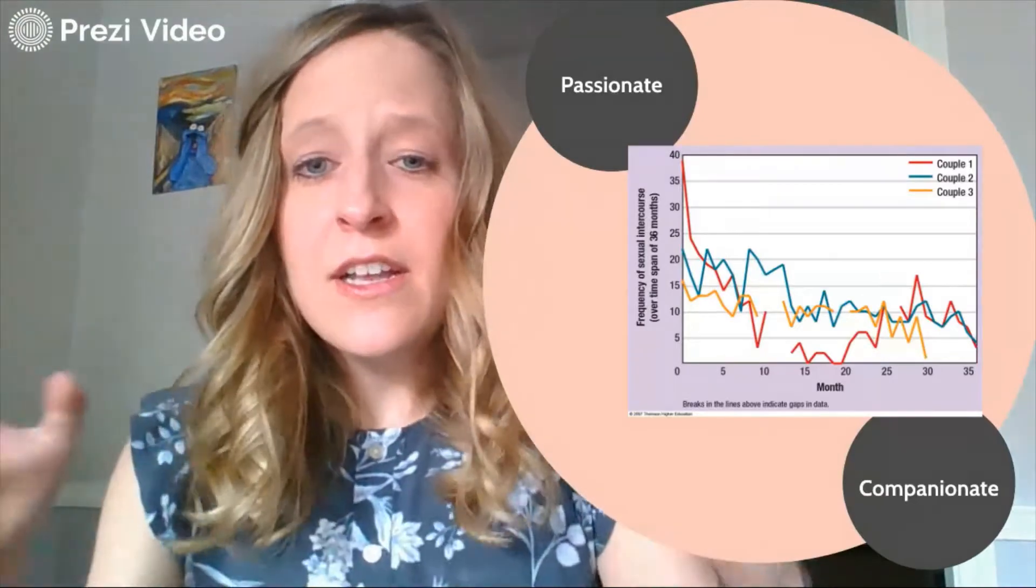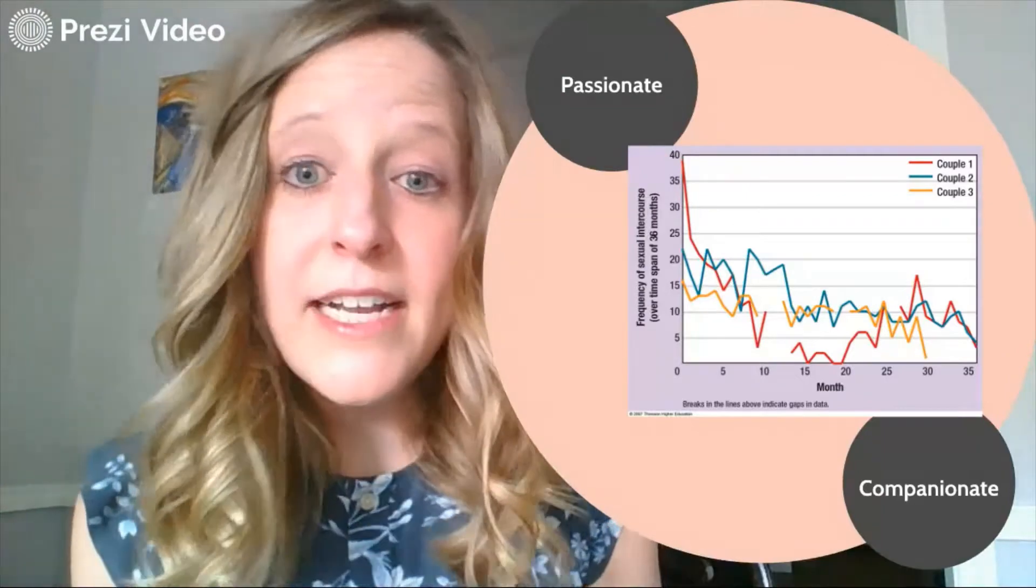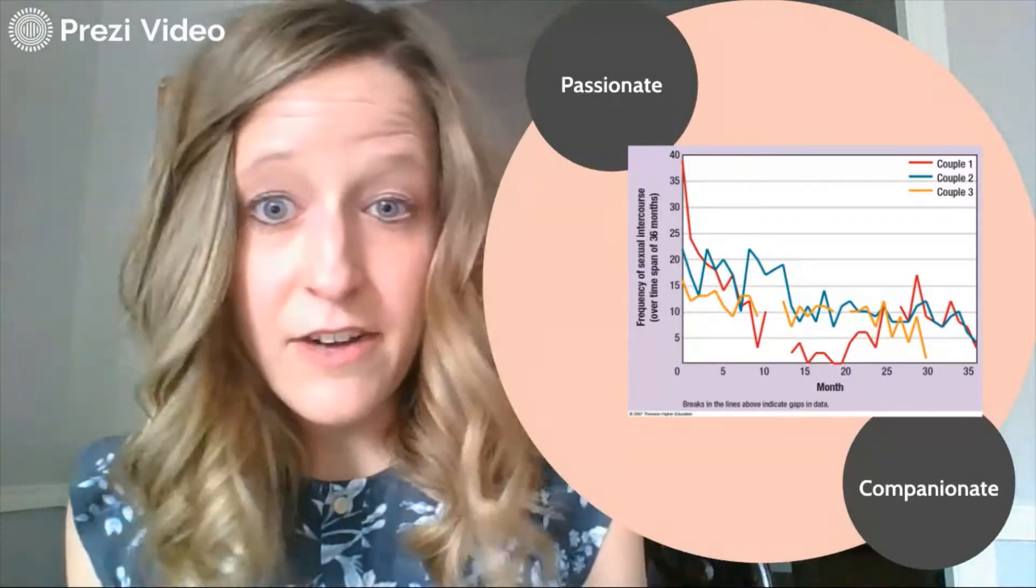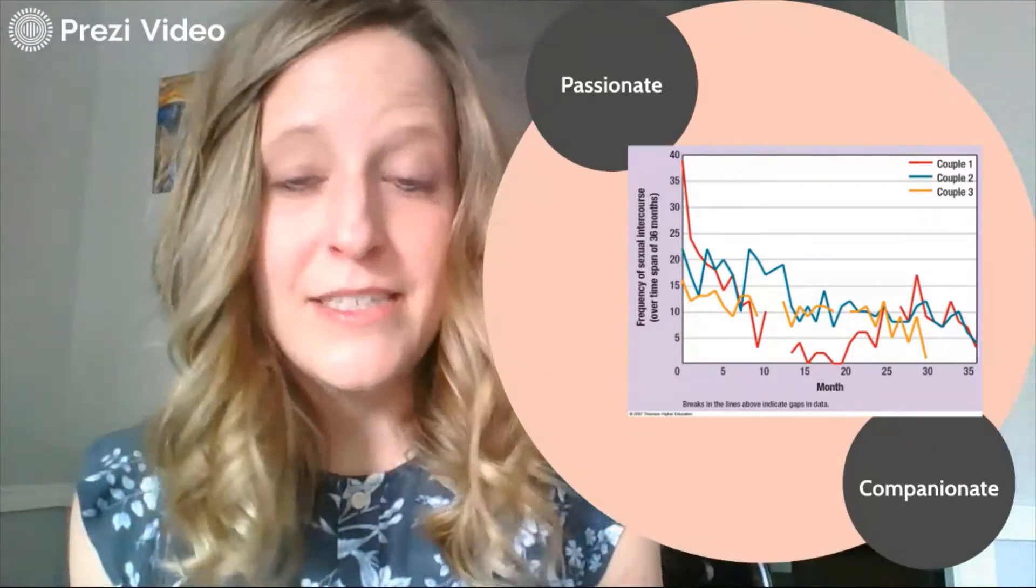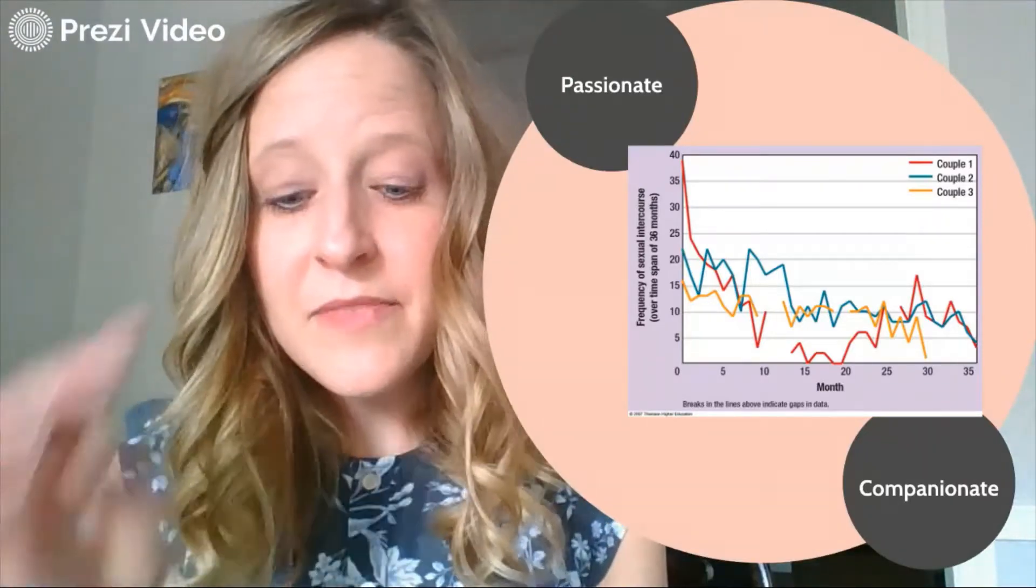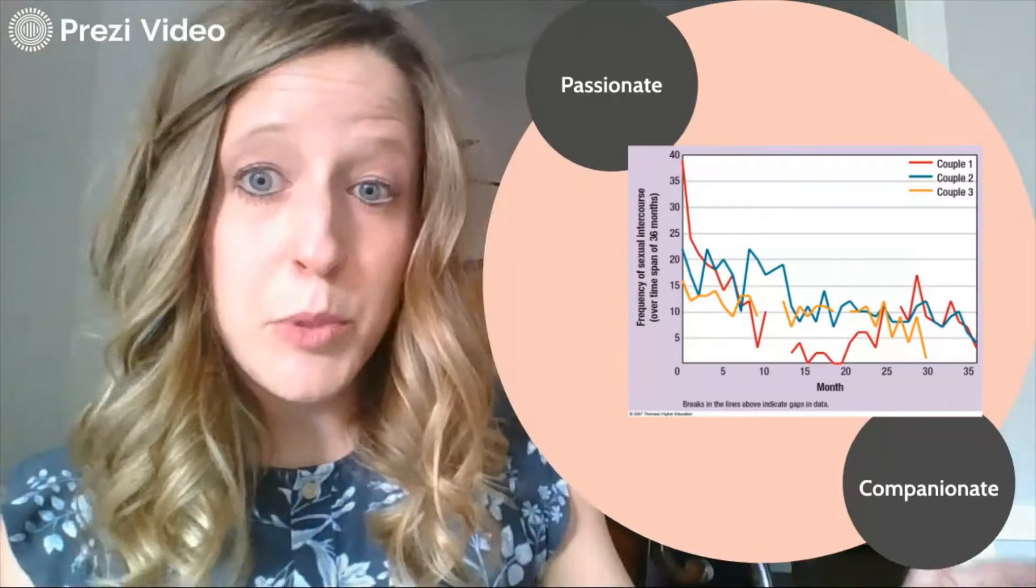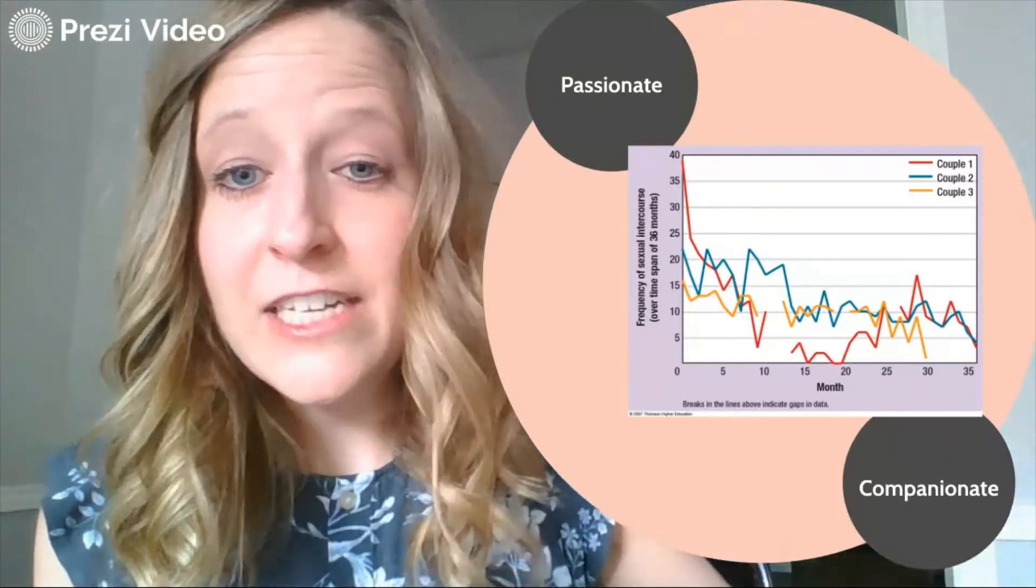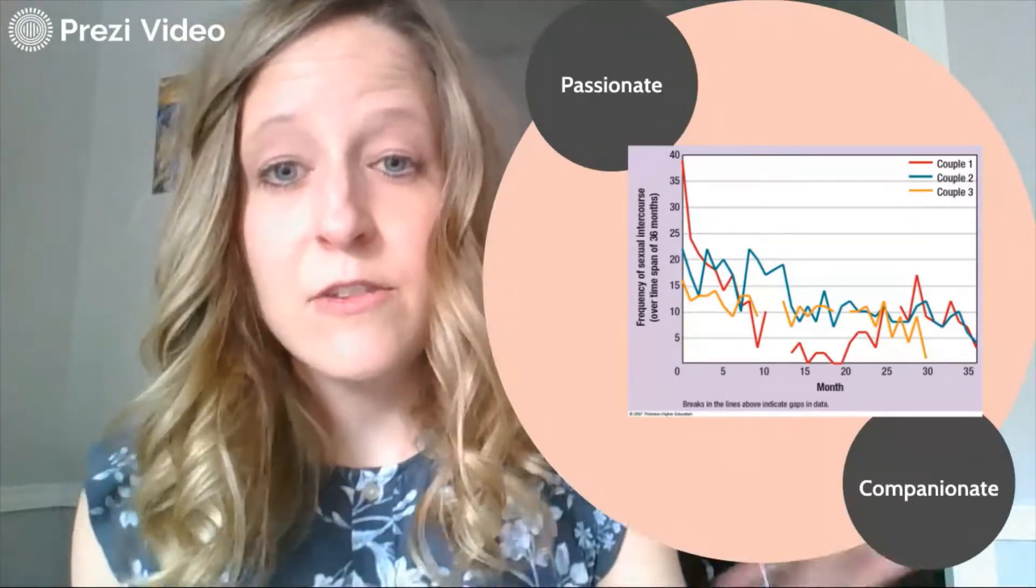This passionate love dissipates over time and is replaced with companionate love, which is characterized by commitment and intimacy. There are a couple of explanations for why we see this predictable pattern across relationships and this change in the type of love.